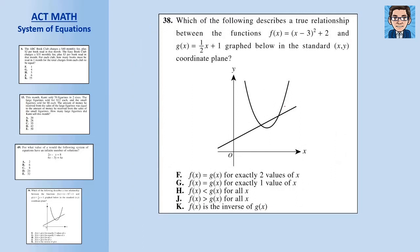The last problem asks us to interpret a graph. Where the two curves intersect are the points where both equations are true — and there are two intersection points, so F is our answer. Exactly one intersection point is wrong since we can see two. F(x) is not less than G(x) for all x, since it's above in some places and below in others, so those comparisons are not always true. The functions are also not inverses of each other since they don't reflect over y equals x.